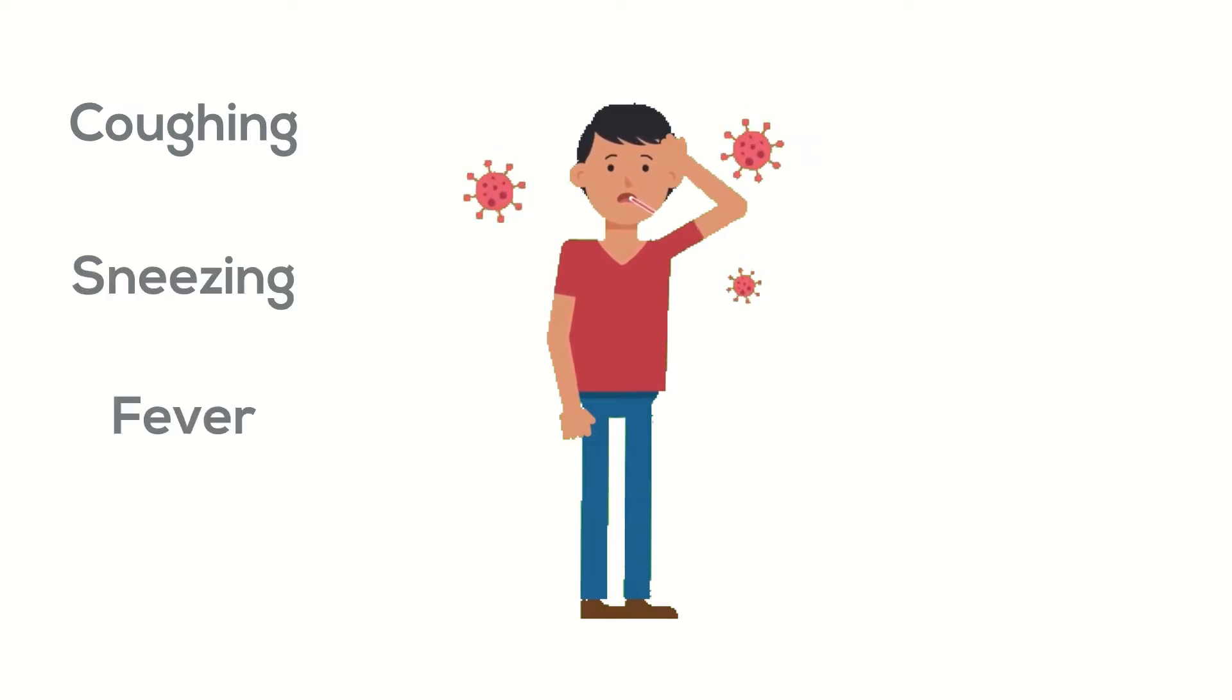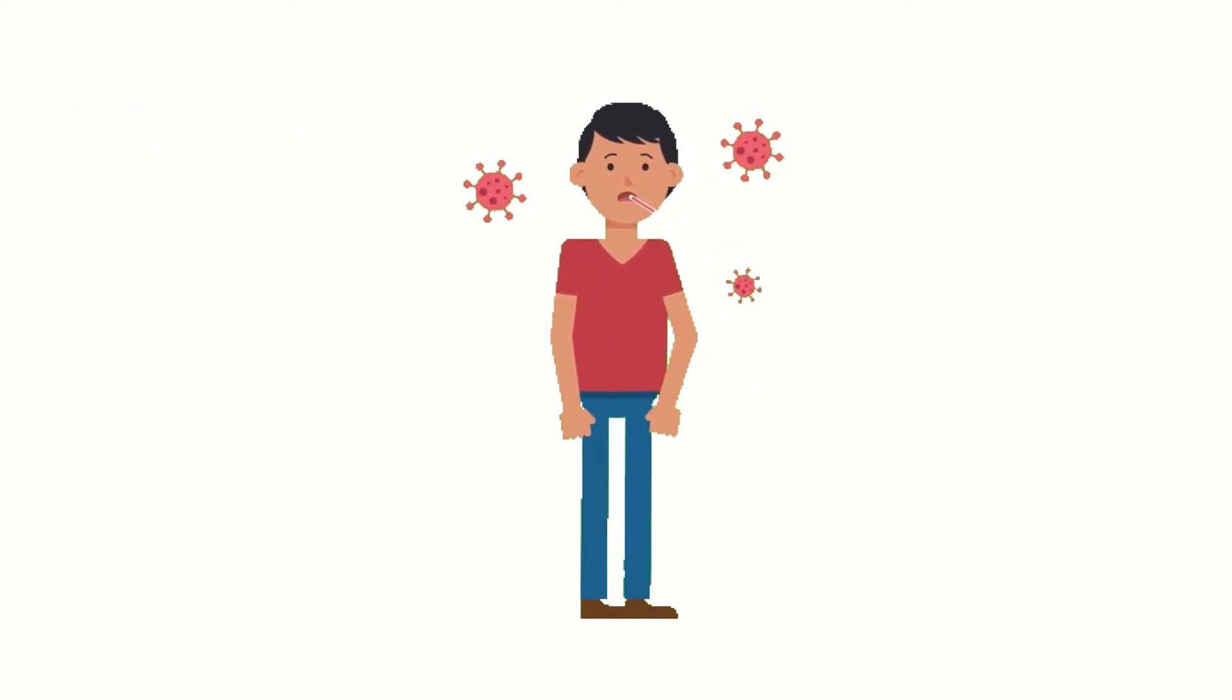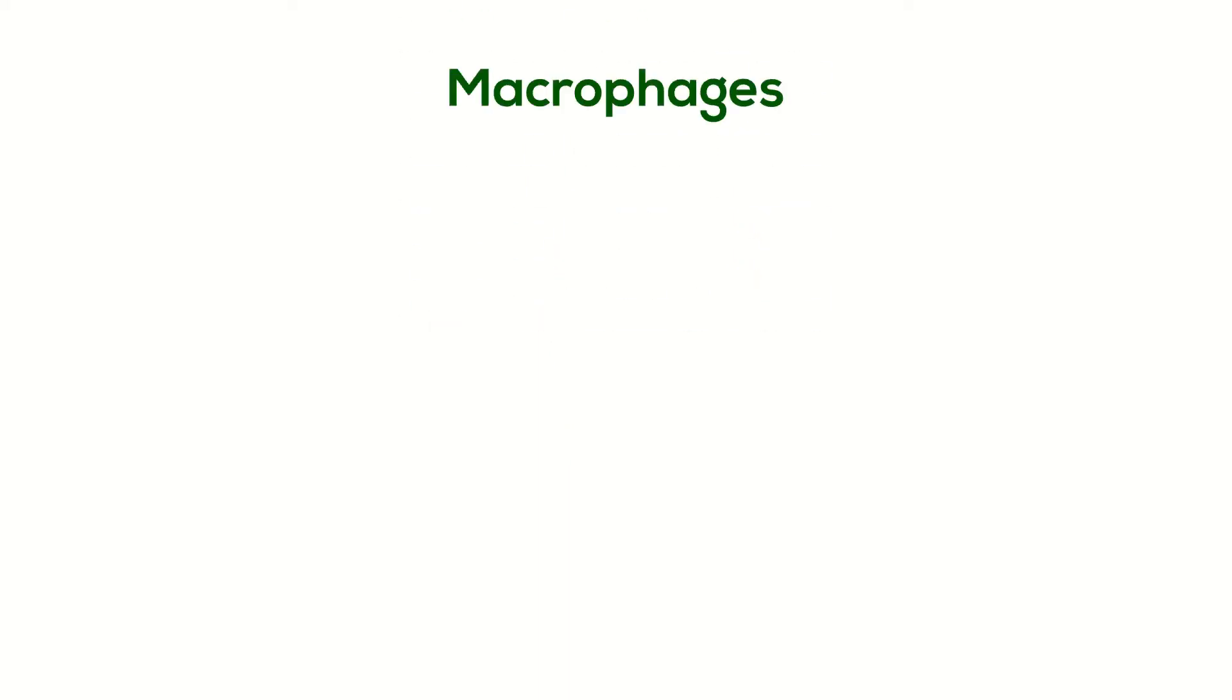The immune system also sends the following white blood cells: macrophages swallow up and digest germs and dead or dying cells, leaving behind parts of the pathogens called antigens.